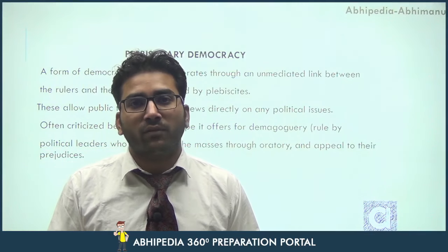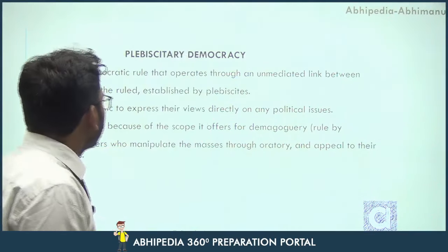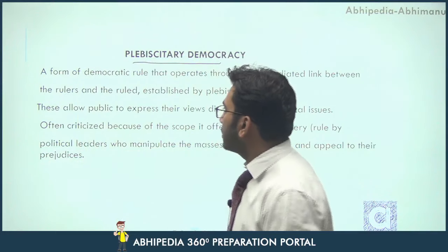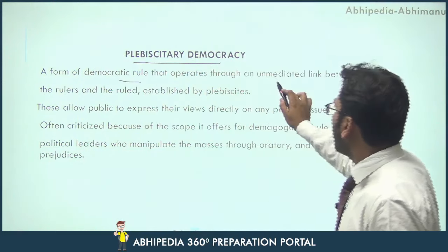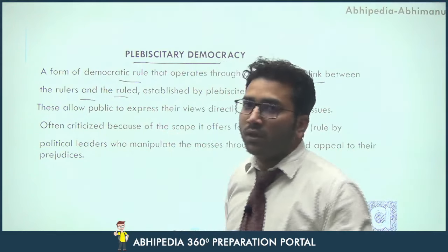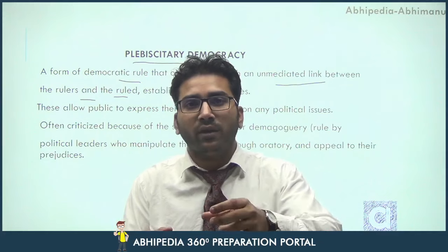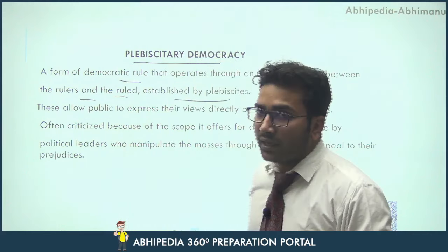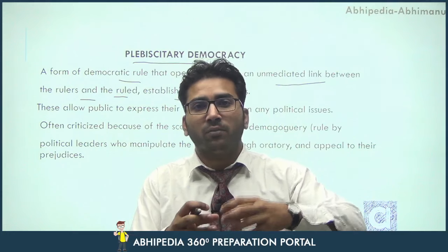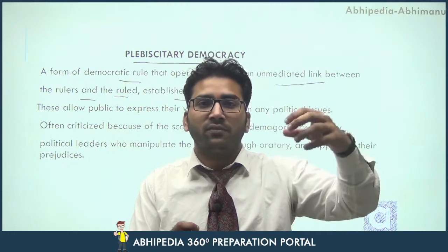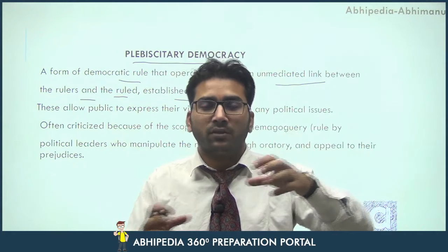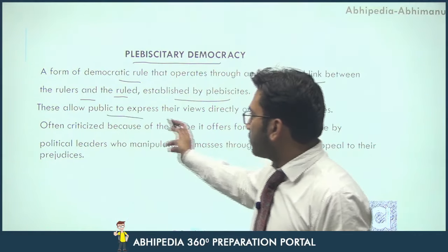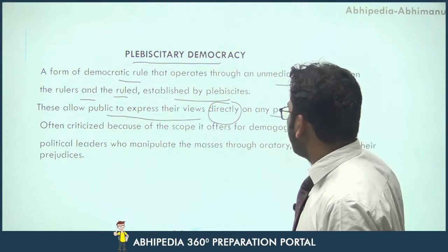Let's see one by one what are the different types of democracy and what are the different popular types of democracy. First is plebiscitary democracy, which comes from the word plebiscite. It is a form of democratic rule that operates through an unmediated link between the rulers and the ruled, which simply means that there are no mediators between the ruler and the ruled, between the government and the governed.